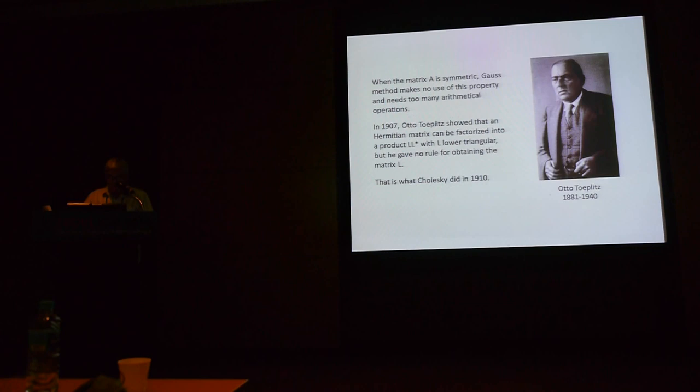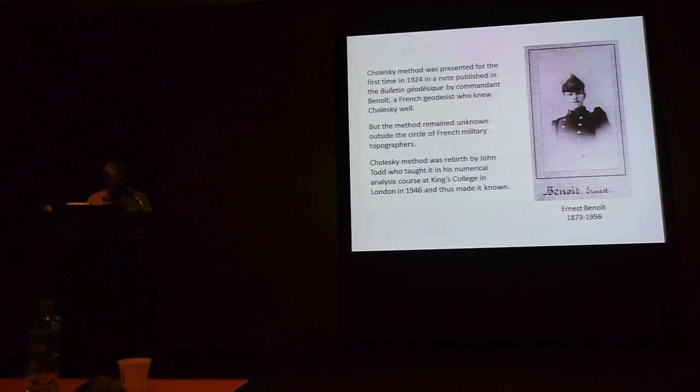What was the situation before Cholesky? When the matrix A is symmetric, Gauss's method makes no use of this property and needs too many mathematical operations. In 1907, Autonne showed that a Hermitian matrix can be factorized into a product L adjoint with L lower triangular, but he gave no rule for obtaining the matrix L. That is precisely what Cholesky did in 1910. Cholesky's method was presented for the first time in 1924 in a note published in the Bulletin Géodésique by Commandant Benoit, a French geodesist who knew Cholesky well, but the method remained unknown outside the circle of French military topographers.